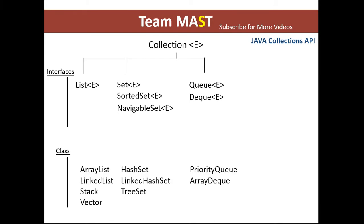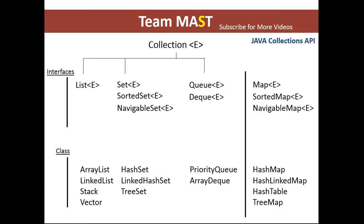After that, we have a list of classes which implement the interfaces like list, set, and queue. The ArrayList, LinkedList, Stack, and Vector classes implement the list interface. The classes like HashSet, LinkedHashSet, and TreeSet implement the set interface. Next, we have the map interface, sorted map interface, and navigable map interface. This is not a part of the Java collection API, but in terms of data structure it is necessary and we use it as much as we use the collection API.